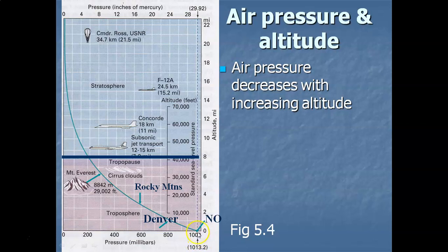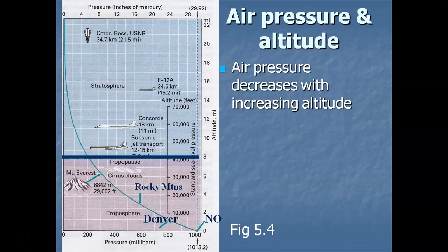We have the highest pressure at sea level because, going back to the definition, air pressure is the weight of a column of air pressing down on the surface. Since we're at sea level, we have the full weight of the atmosphere pressing down on us. Now let's go up a mile — to the mile-high city of Denver. The standard air pressure reading at one mile up is only 800 millibars.